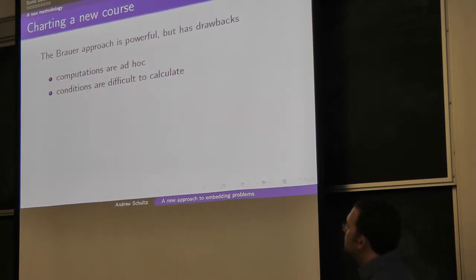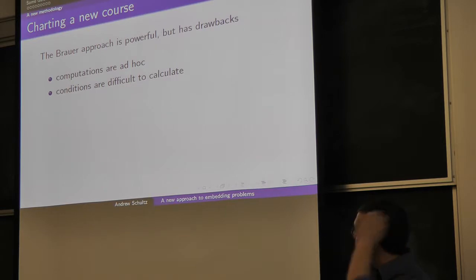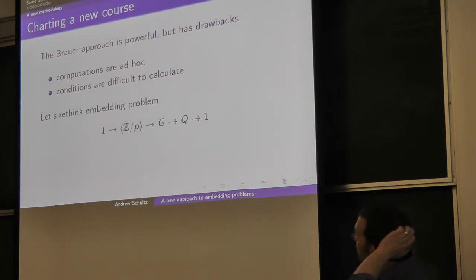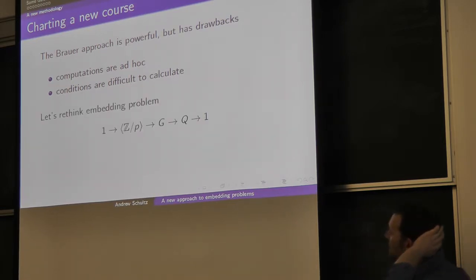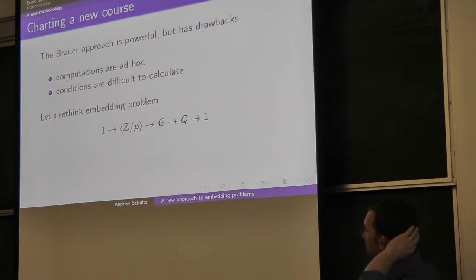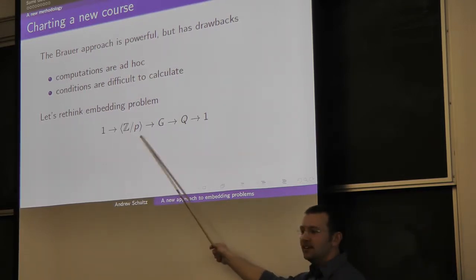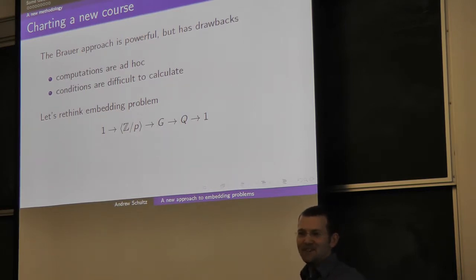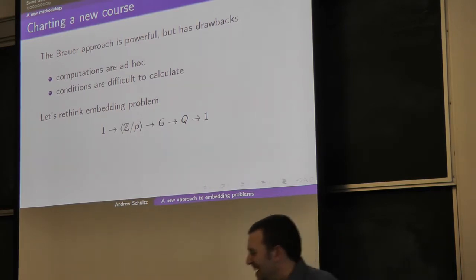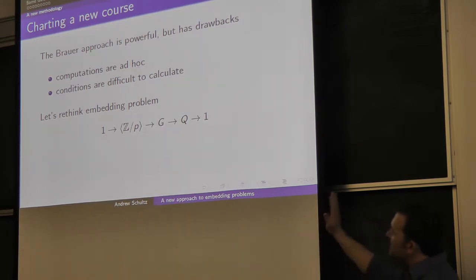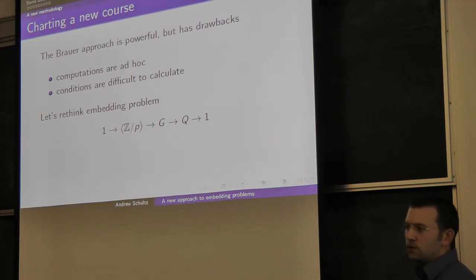What we want to do is find a different approach — that's what I'll detail for the rest of the talk. We're going to go back and look at the group ZP itself, and look at short exact sequences. Let's go back to the setup for the Brauer-type embedding problem.